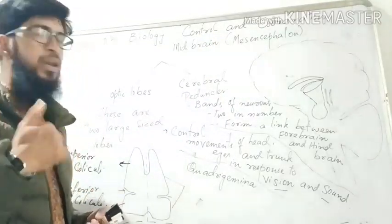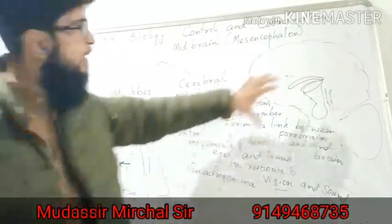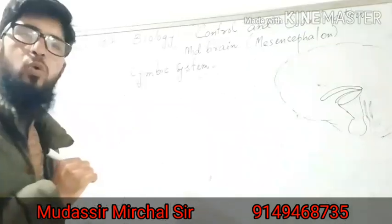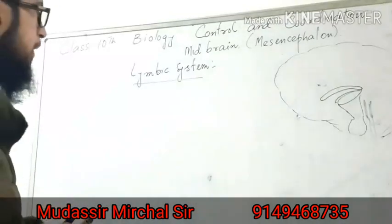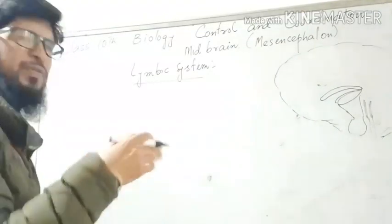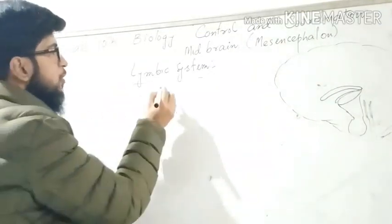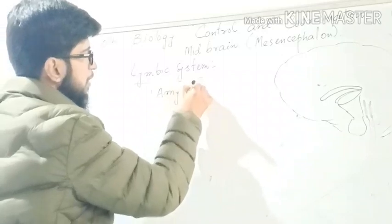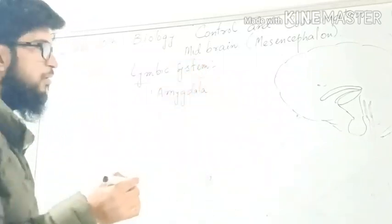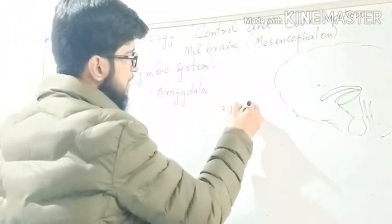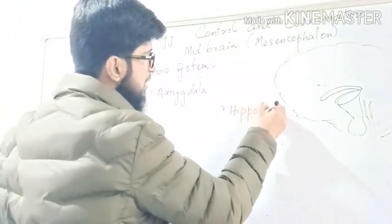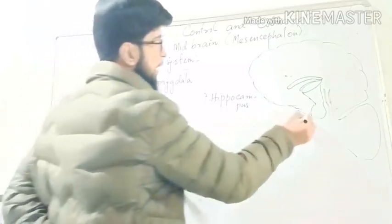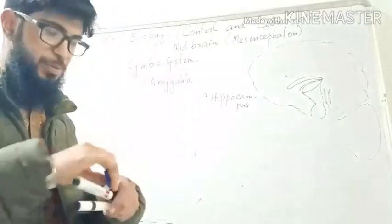Now we are going to talk about a very important thing — the limbic system, which is present in this region of the brain. The limbic system has some parts and we will talk about its functions also. It has a part called amygdala, and another part called hippocampus (H-I-P-P-O-C-A-M-P-U-S).